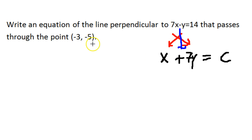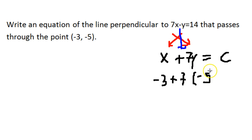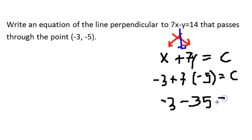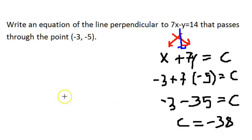Now we are going to plug in the coordinates of the given point. Plug in negative 3 for x, plus 7 times negative 5, and that's equal to c. That gives us negative 3 minus 35 is equal to c, or in other words c is equal to negative 38. So our final result is x plus 7y is equal to negative 38.